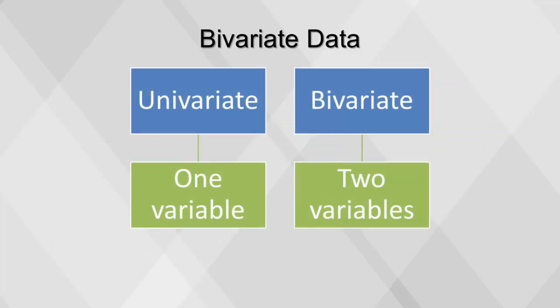Bivariate data consists of two quantitative variables for each individual. In contrast with univariate or single variable data, our first interest is in summarizing such data in a way that's analogous to summarizing univariate data.